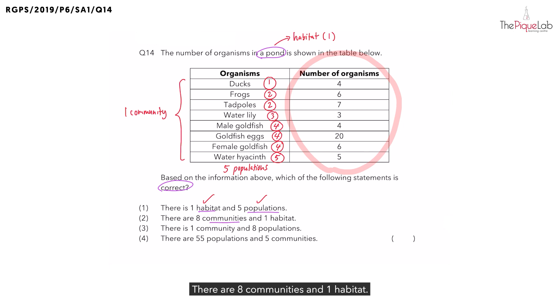There are eight communities and one habitat. Is that correct? No, we do not have eight communities. We only have one community and we have one habitat. So, statement two is out.